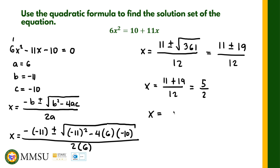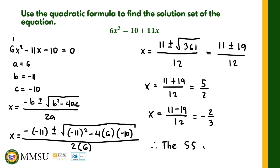The second value is x equals 11 minus 19 over 12. So 11 minus 19 is negative 8 over 12, which simplifies to negative 2/3. Therefore, the solution set — writing the smaller number first — is negative 2/3 and positive 5/2.